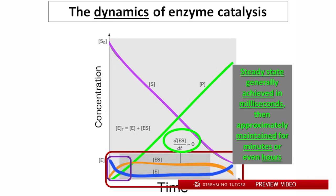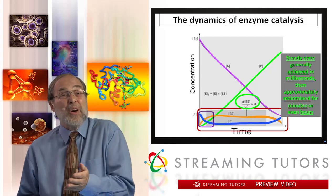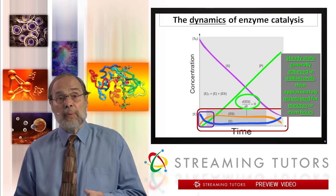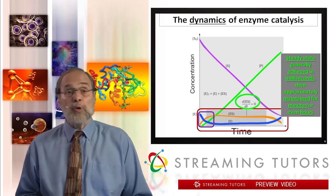Steady-state is generally achieved very rapidly, typically on the order of milliseconds — essentially instantaneous from our point of view. That steady-state level of enzyme-substrate complex remains virtually unchanged, depending upon substrate and product initial concentrations, for minutes or even hours. In order to mathematically represent what's going on in an enzymatically-catalyzed reaction, we need simplifying assumptions; otherwise the mathematics becomes prohibitively difficult. Our first simplifying assumption is that the enzyme-substrate complex is present at a steady-state concentration — an excellent approximation, particularly early in the reaction.